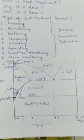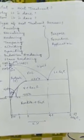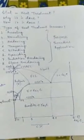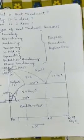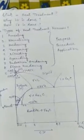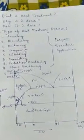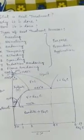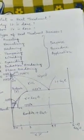Welcome to the video lecture. Today we will talk about the heat treatment process. Heat treatment is defined as an operation involving the heating and cooling of a metal or an alloy in the solid state to obtain certain desirable properties.